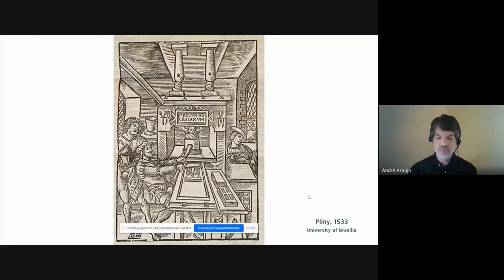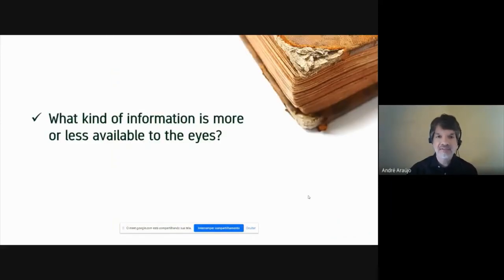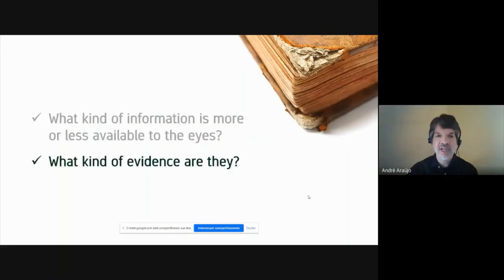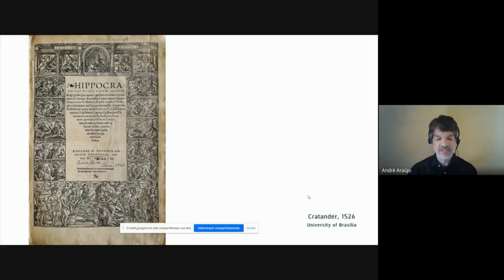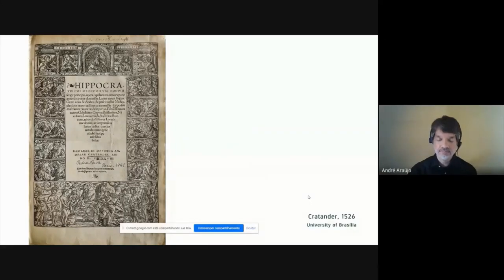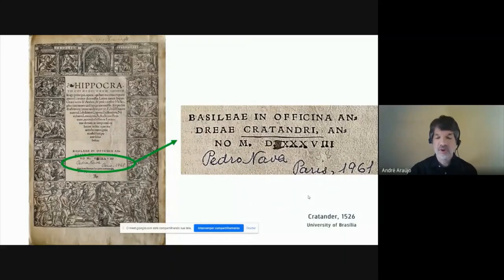I think it could be a very useful exercise when investigating early modern printed artifacts — as well as when teaching with them — to ask: what kind of information is more or less available to the eyes? What kind of evidence are they? On the one hand, we know that this particular copy was bought in Paris by the Brazilian physician and book collector Pedro Nava in 1961. The University of Brasilia acquired part of this book collection in 1983, since when this copy of the Hippocratic works was wrongly catalogued. The provenance records are patchy, which makes it even more difficult to ascertain under which circumstances the date was altered on the title page.